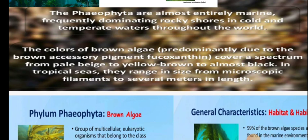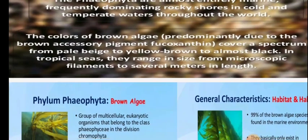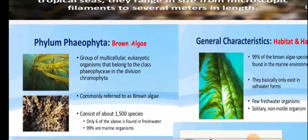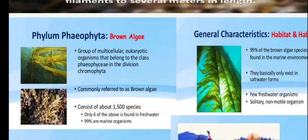These forms range from filaments to several meters in length. The size of Phaeophyta brown algae ranges from microscopic to very large forms. Some forms are multicellular eukaryotic organisms belonging to the class Phaeophyta.